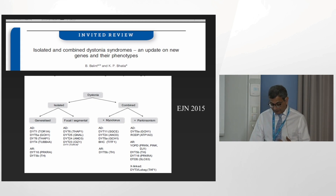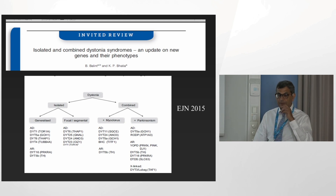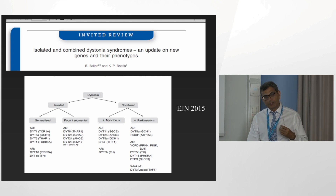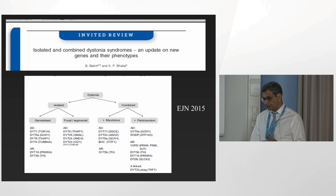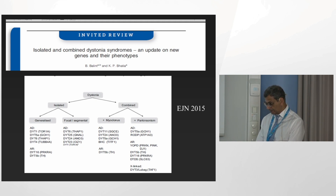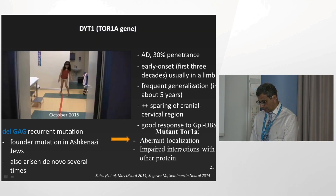One of the things which has happened in the field of dystonia is that there have been advances in genetics. A large proportion of dystonia is probably non-genetic, but more and more genes are being found both for isolated dystonia and for combined dystonia. In this paper we have covered how to look for genetic causes in those with isolated and combined dystonia. I'm going to take you through some of the isolated dystonia genetic causes — some which cause generalized dystonia and some which cause focal isolated dystonia.